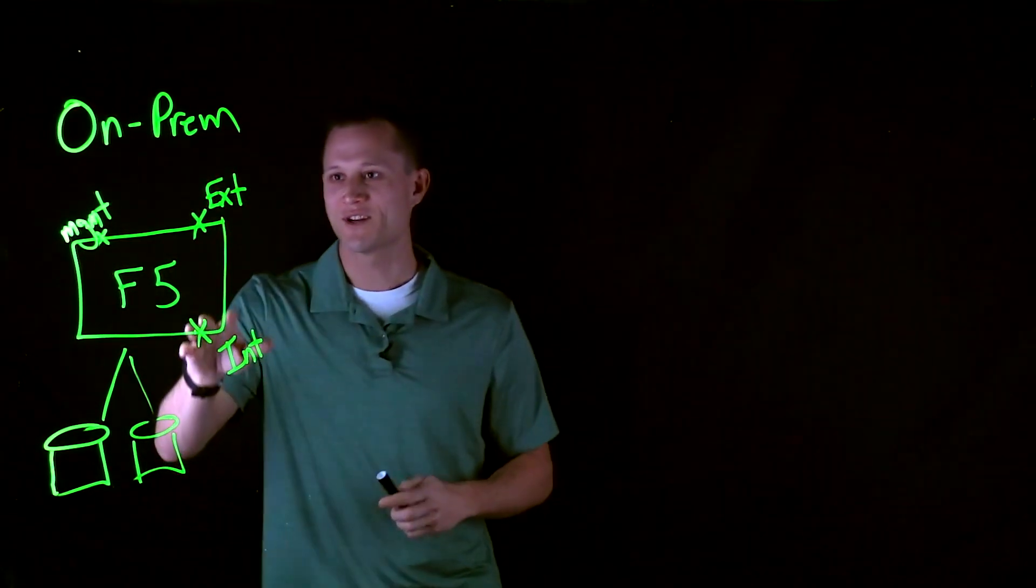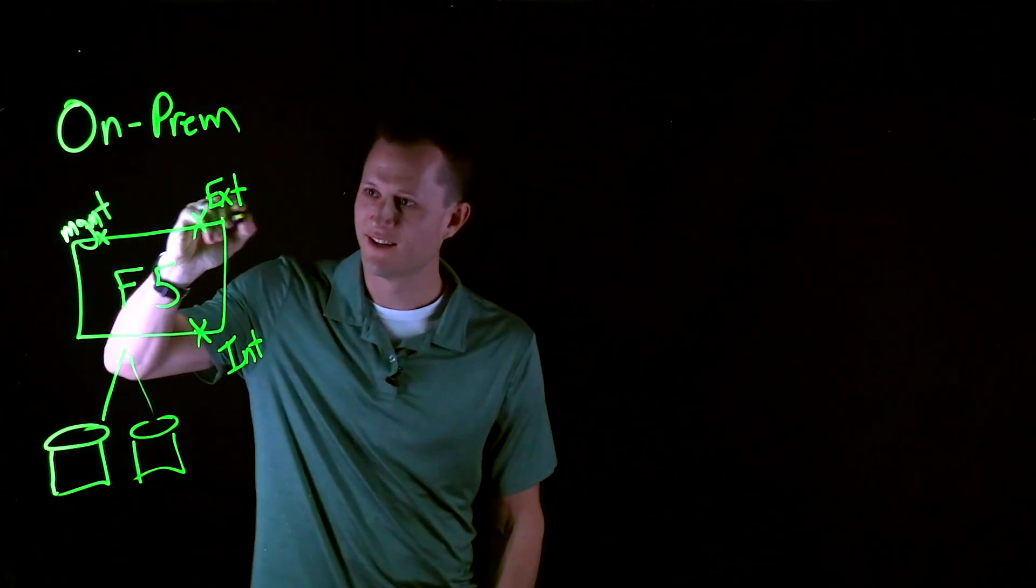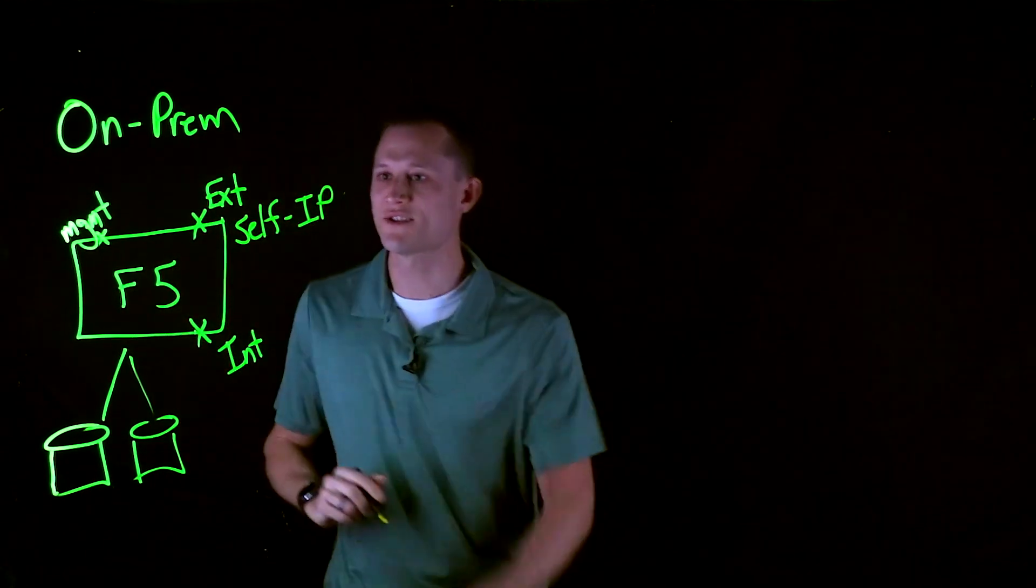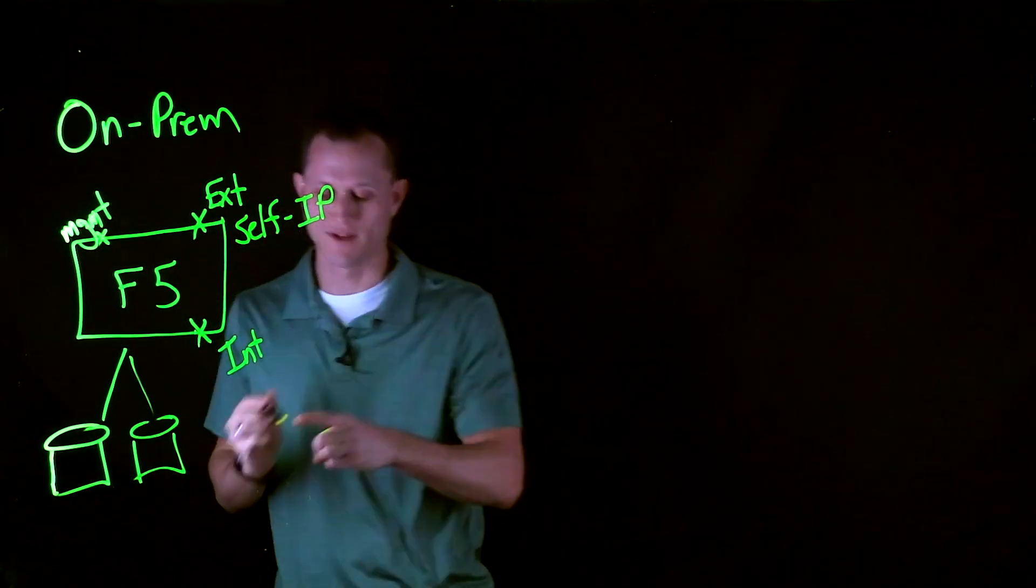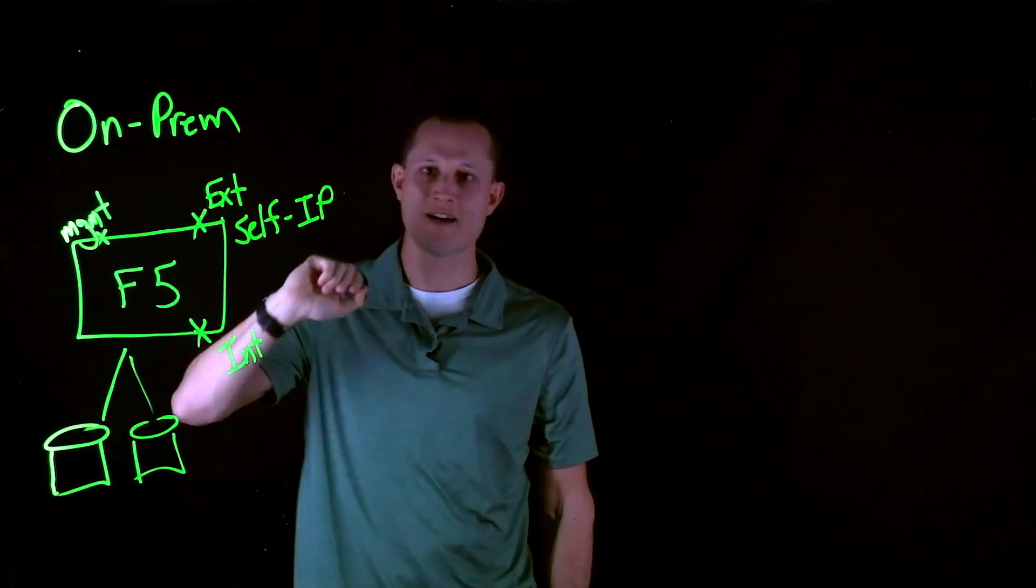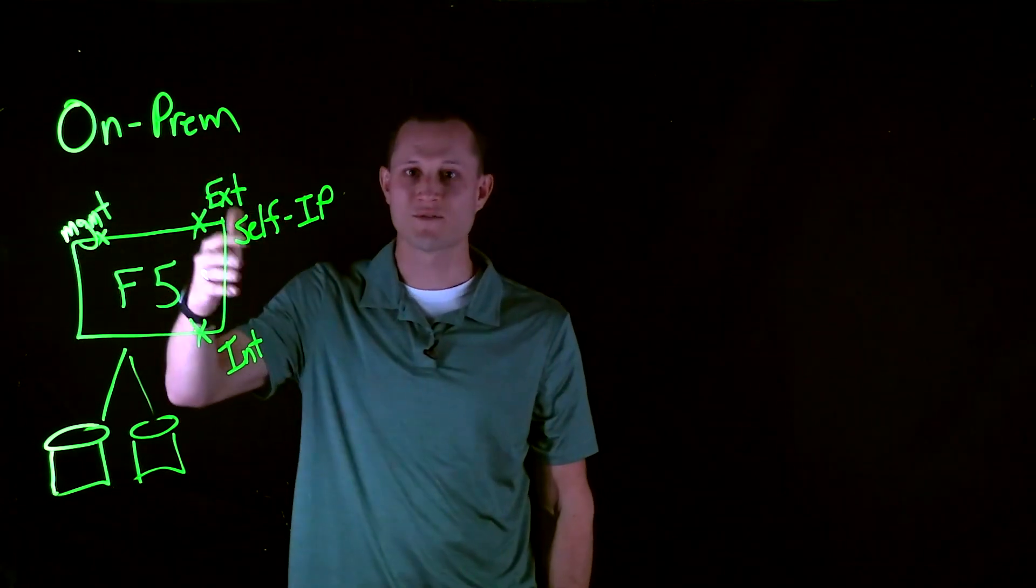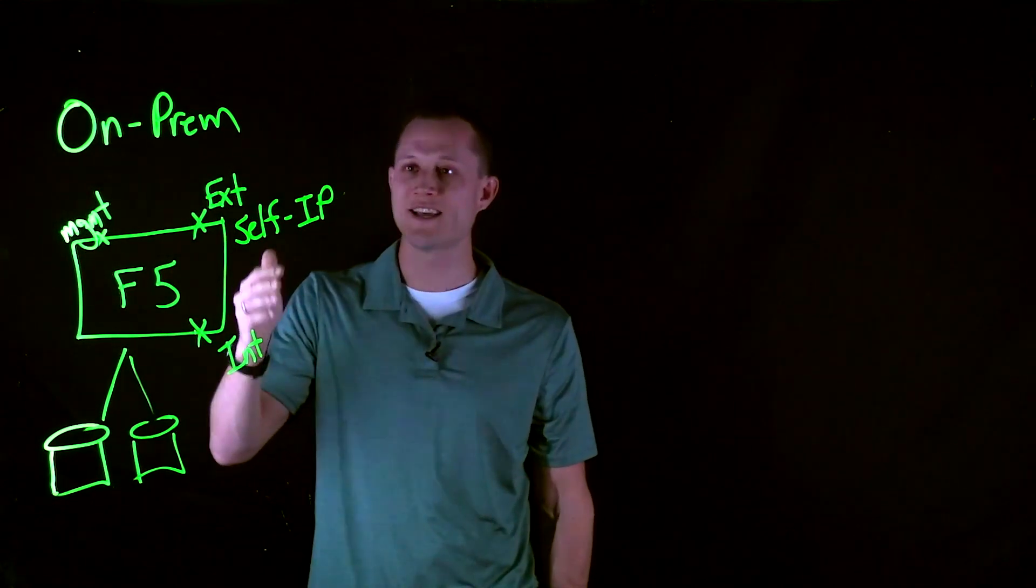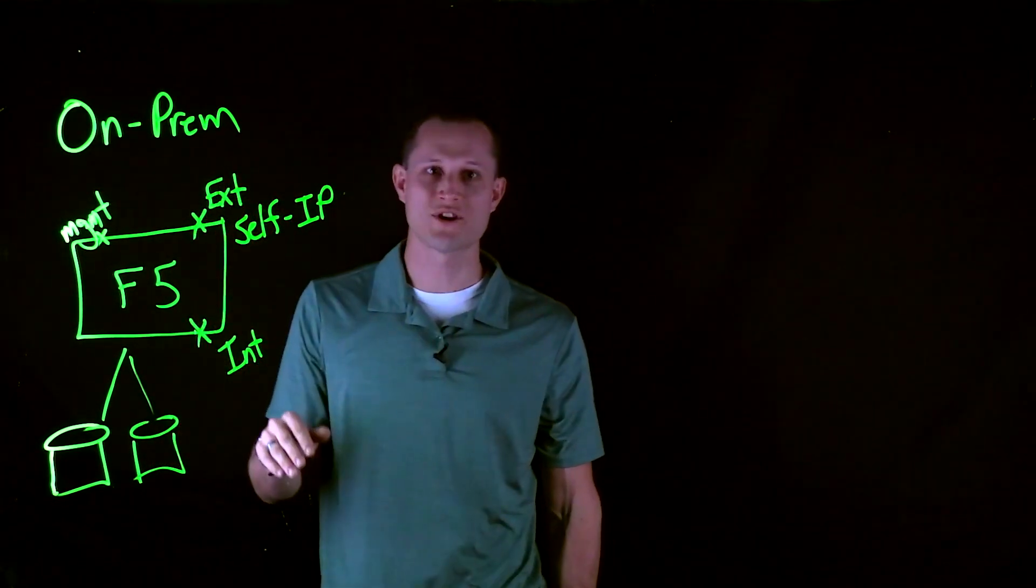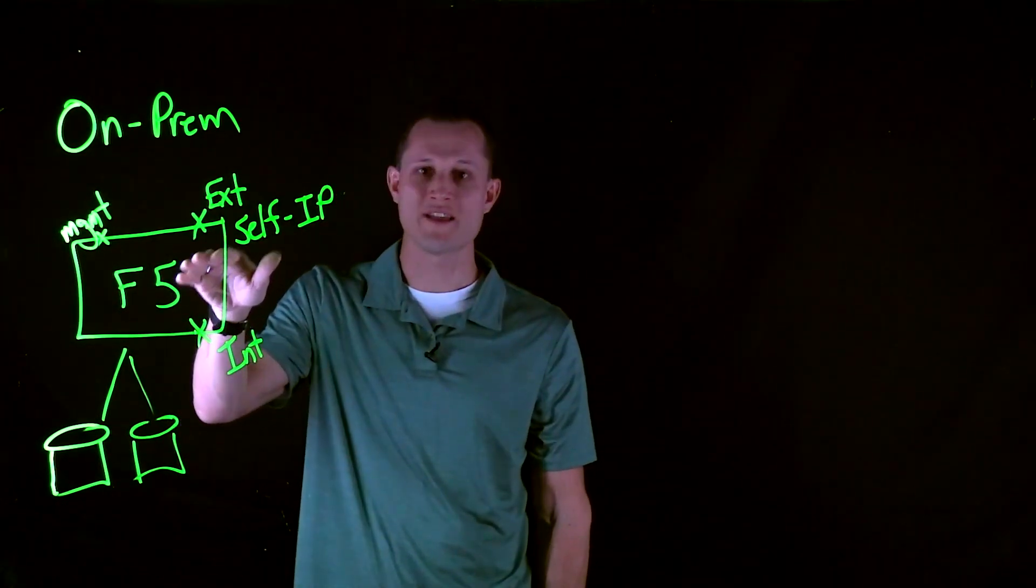Each of these F5s have something called a self-IP. So, if we write self-IP right here, this is a way for the F5 to have an IP address in the network path to know how to get in and out of the F5. This is going to be used by network switches and routers for gratuitous ARP and data paths to figure out how to get data from a client to the back-end server and which way to route that. We do that via having self-IPs on the F5.